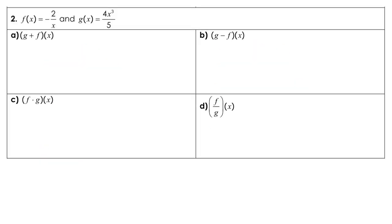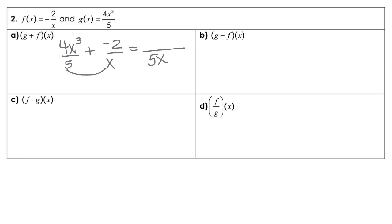For question 2, we are adding first. g of x is going to be 4x cubed over 5, and I need to add to that negative 2 over x. We'll use our shortcut — multiply the denominators, and then cross multiply for the numerators, so that's going to be 4x to the 4th and then minus 10. To check your domain, because you do have a rational, it looks like we'll have all real numbers except x cannot be equal to 0.